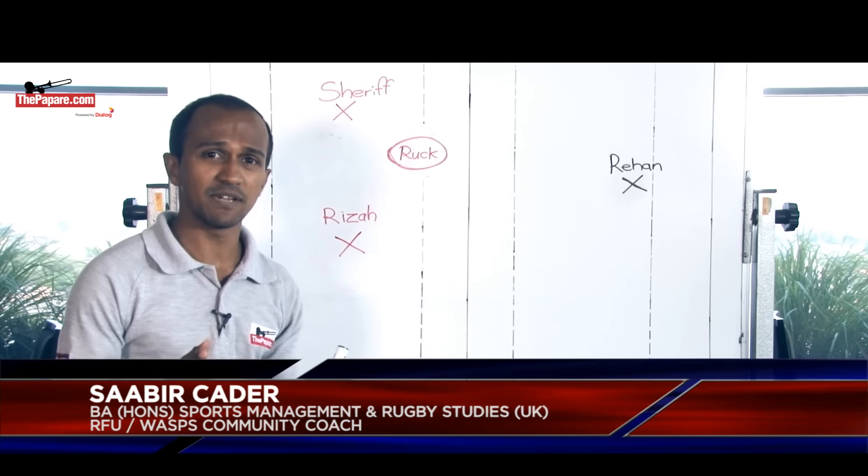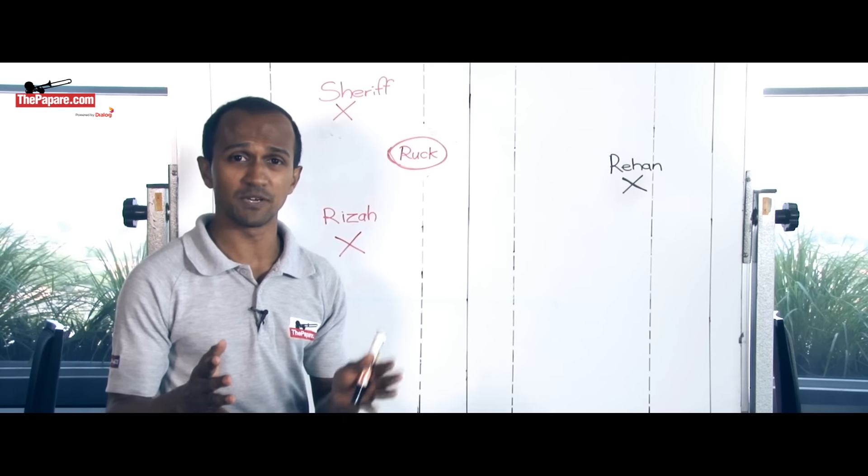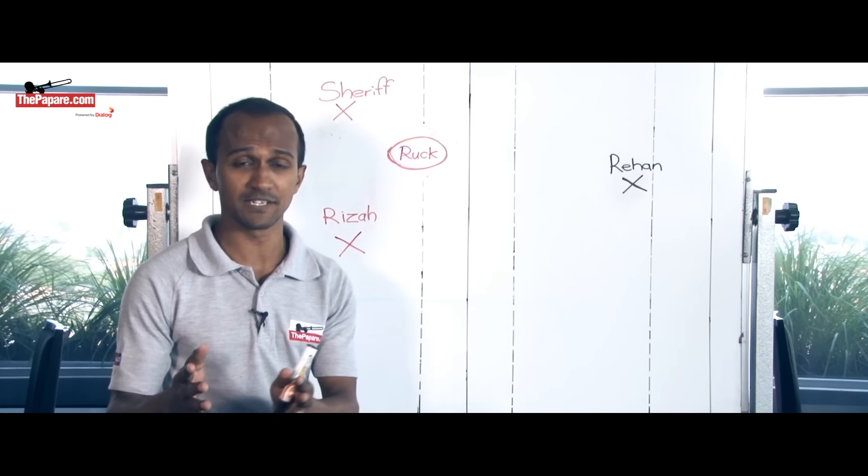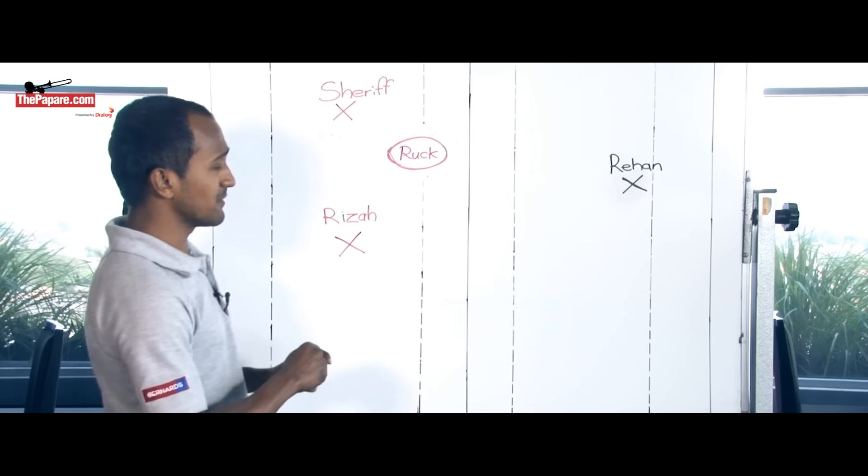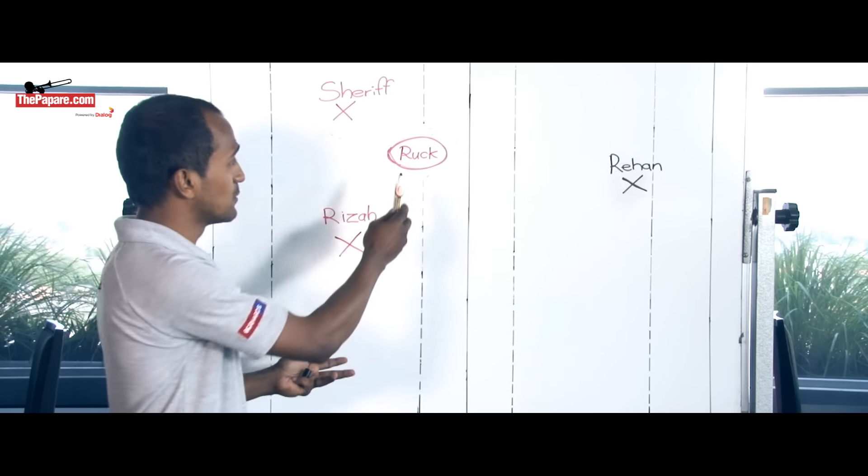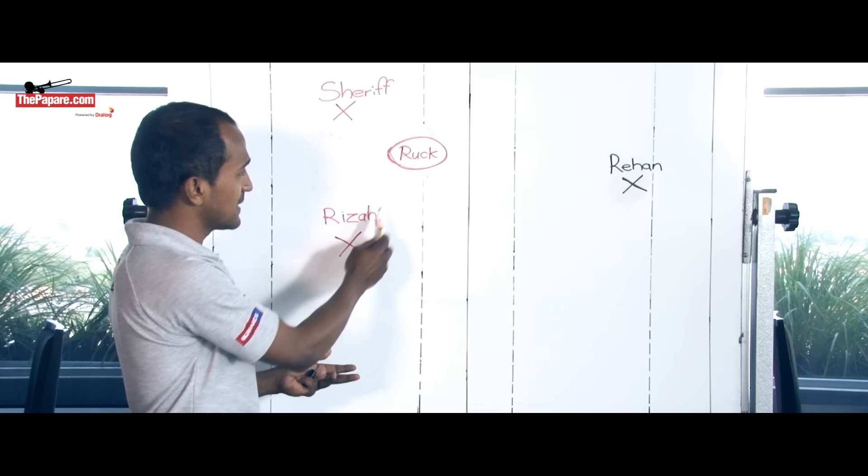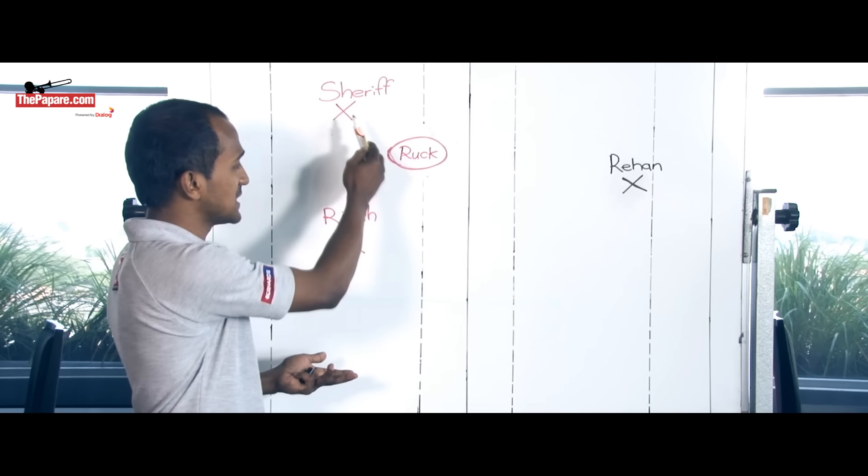Of course, the Police team had two luxury of kickers. One is Riza Mubarak, Sri Lankan number one kicker, and of course Sherif Mohamed, who is a former tasker. Now during a ruck, especially in their own half, Police had the kicker ball, like I said, Riza and Sherif.